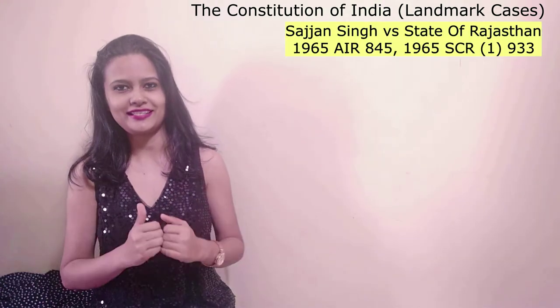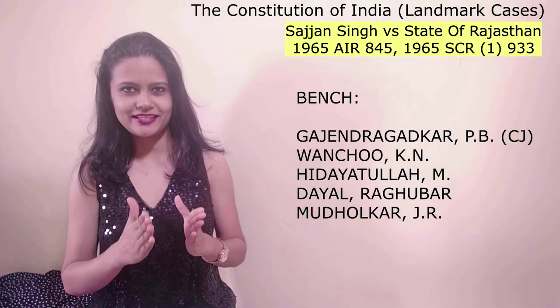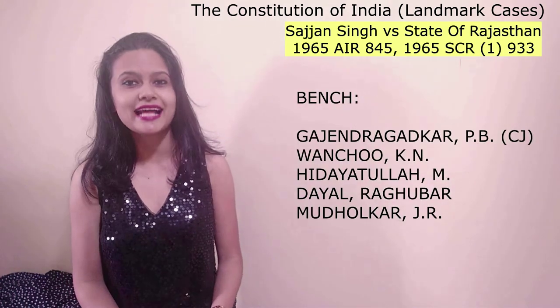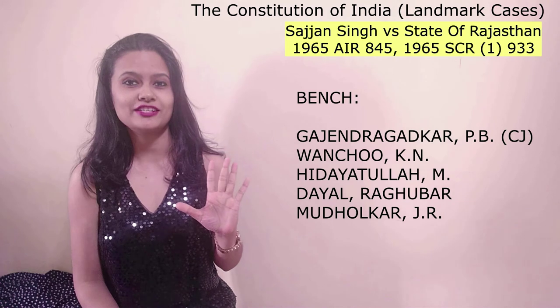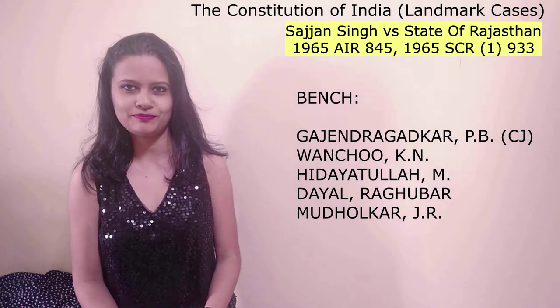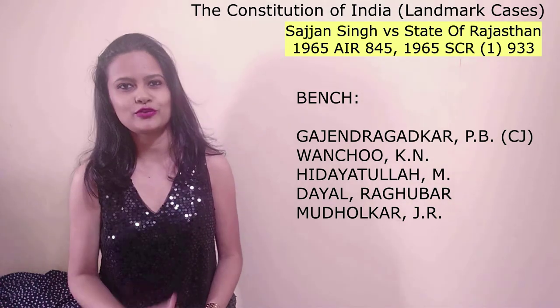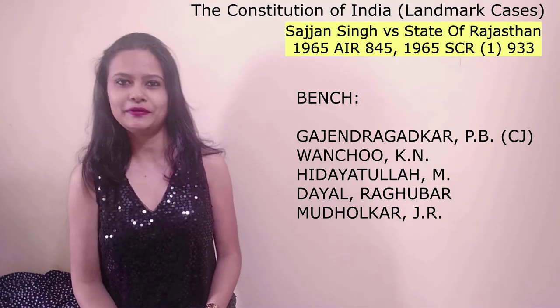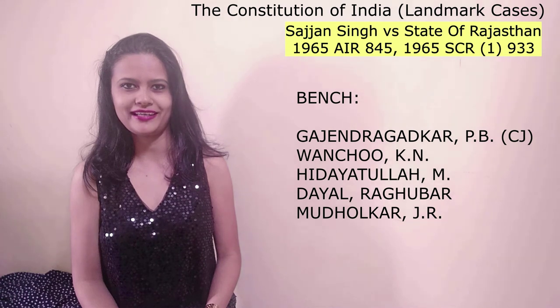So let's start with today's case. This case of Sajjan Singh versus State of Rajasthan is decided by a five-judge constitution bench, because it also involves interpretation of the Constitution of India.